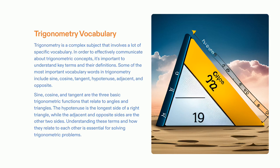Furthermore, the terms hypotenuse, adjacent, and opposite indicate the sides and angles of a right triangle. Gaining knowledge of these terms is critical for solving trigonometric problems.